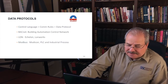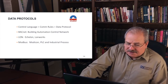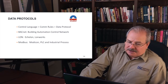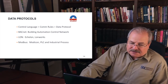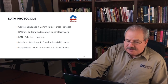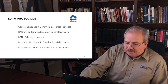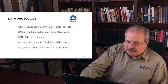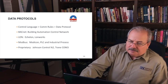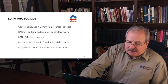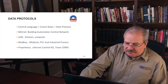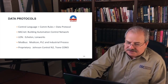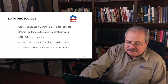Modbus is another player and has been around for a very long time. It's used much more in the industrial process and PLC world than in building automation. There are also a whole bunch of different proprietary networks — Johnson Controls, for instance, has their own network called the N2 network, and Trane has what they call the COM3 and COM4 protocols. You can see that there are a number of different languages, just as we have different languages and unwritten rules in human communication.